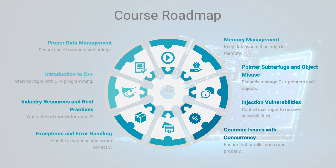From there, we'll move on to pointers and object misuse. C++ is an object-oriented programming language, and as such it makes a lot of use of pointers and objects. In our fourth module, we're going to talk about how to properly and securely use pointers and objects to ensure that you're not creating vulnerabilities in your code that could allow an attacker to cause crashes or gain access to memory they shouldn't.